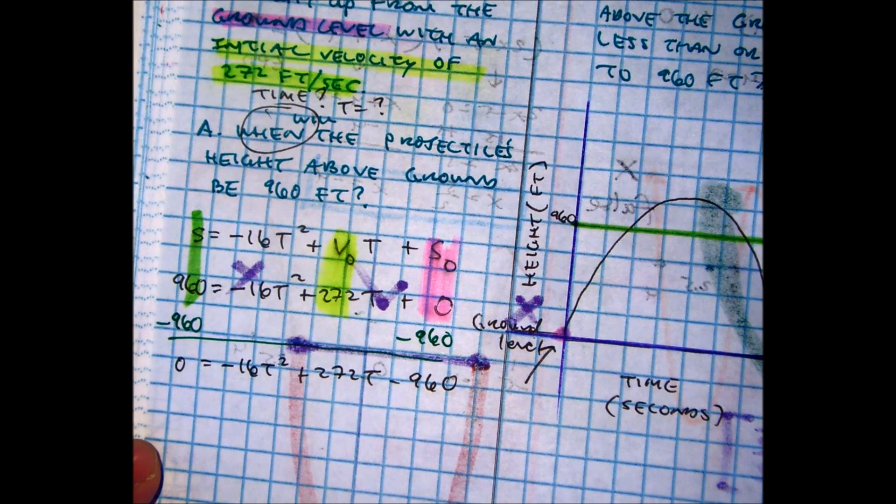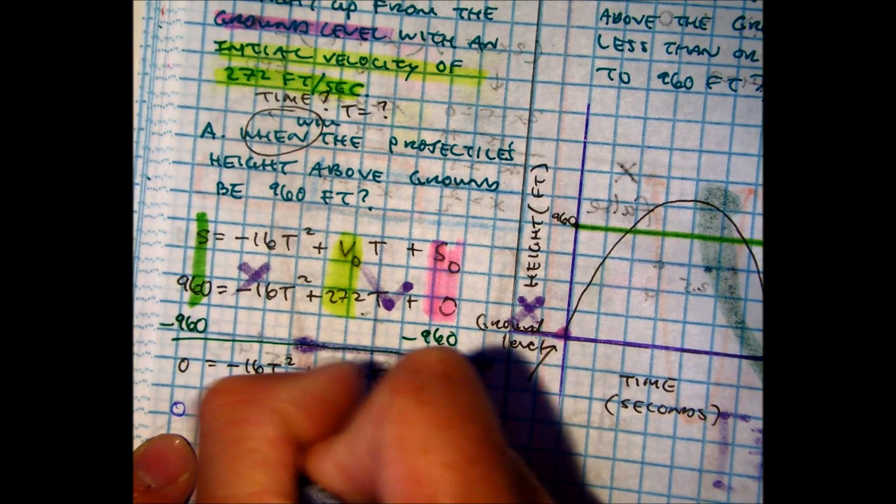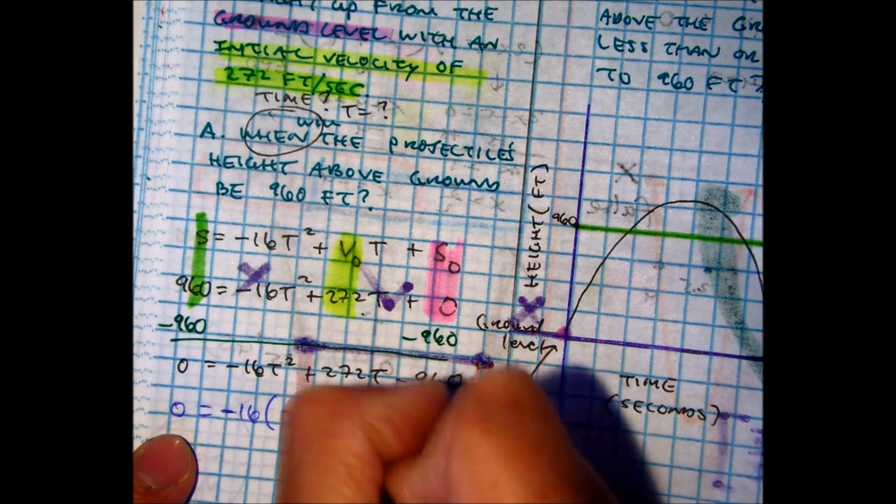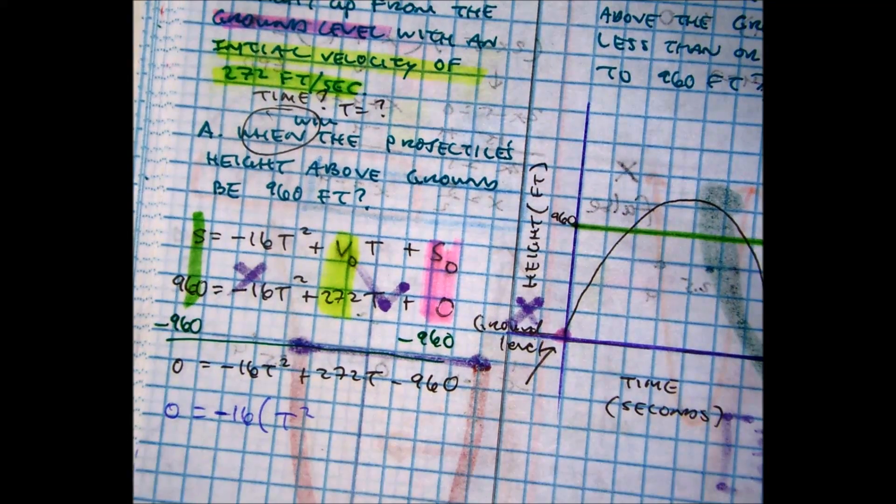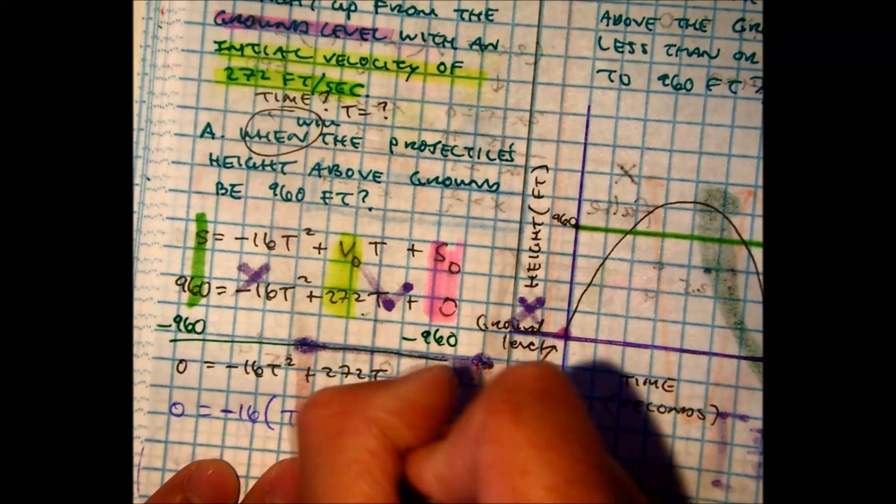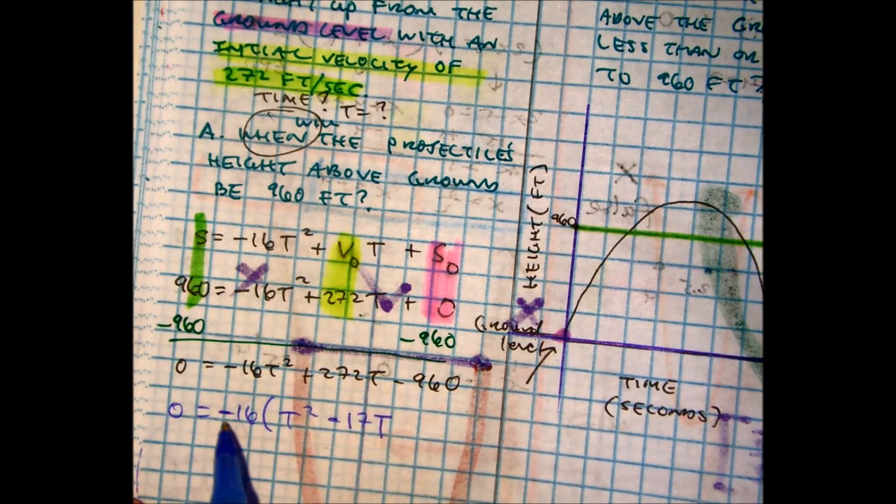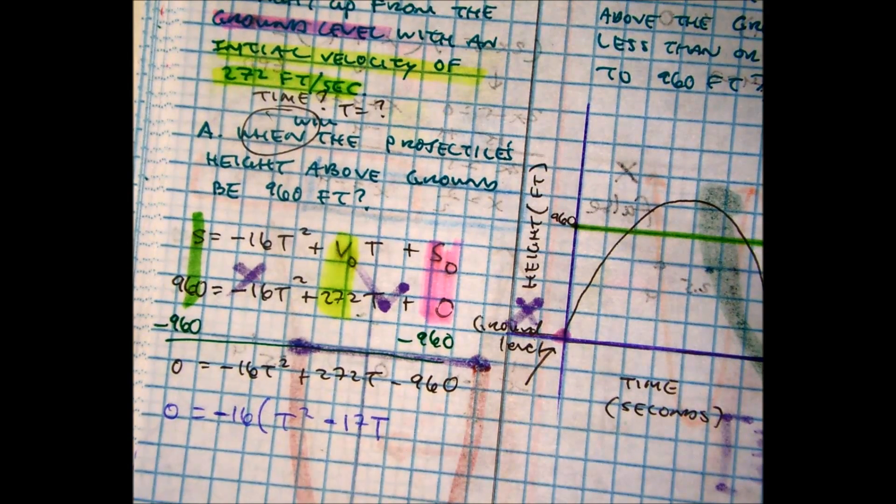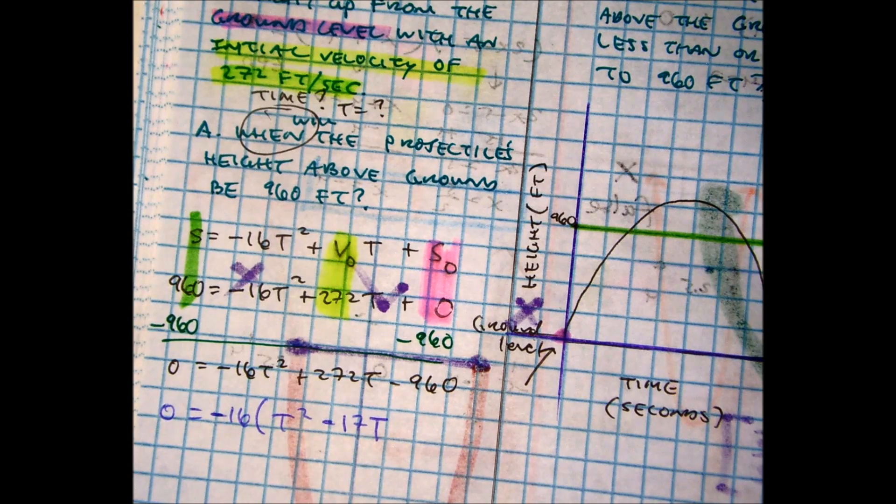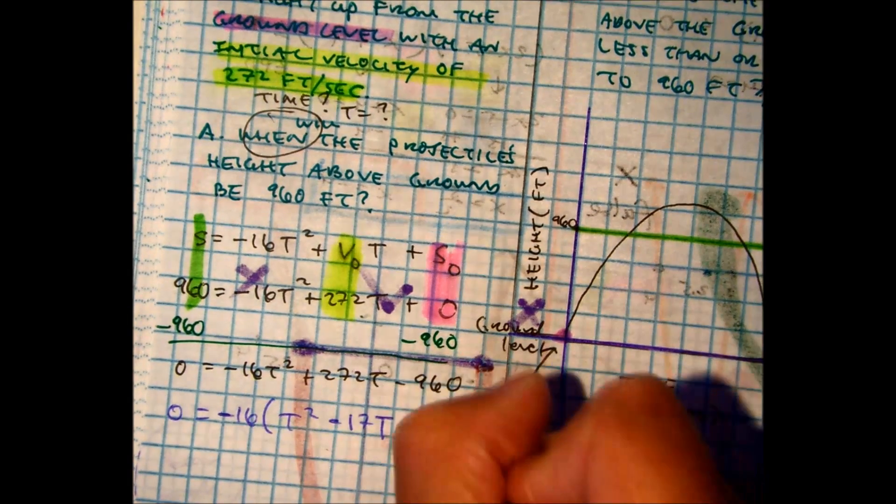Well, I have a big quadratics problem. Let's see if we can factor out a negative 16. I'm left with T squared. 272 divided by negative 16 gives me negative 17T. Remember, you can always distribute to check your answer. And then 960 divided by 16 goes 60 times. So that would be a plus 60.